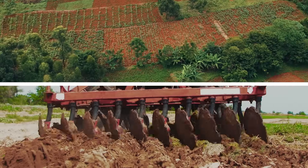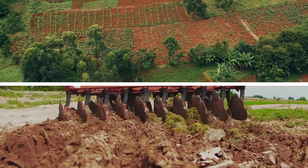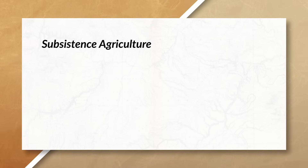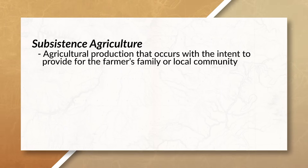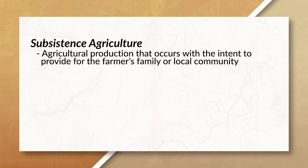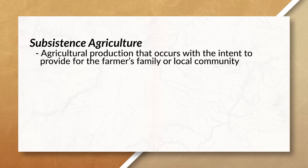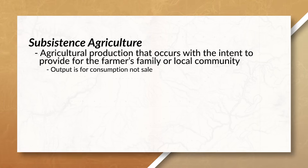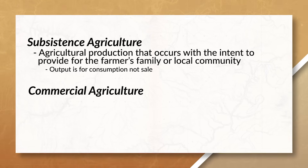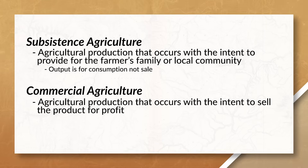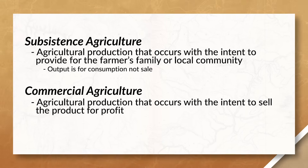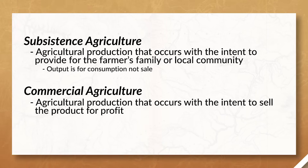To start, we have to understand the difference between subsistence agriculture and commercial agriculture. Subsistence agriculture is agricultural production done with the goal of providing food for a person's family or local community. The purpose is not to make a profit — it is to produce food for consumption. Commercial agriculture, on the other hand, is about producing food for a profit, where the goal is to sell for profit rather than for the farmer to consume.